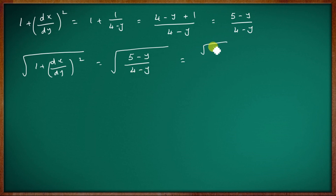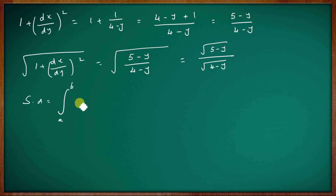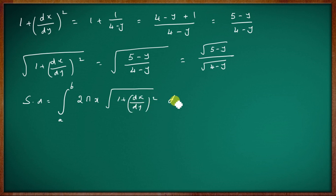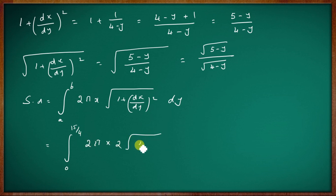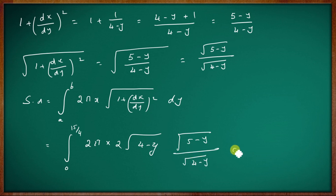Then 1 + (dx/dy)² = 1 + 1/(4−y) = (5−y)/(4−y). The square root is √(5−y)/√(4−y). Substituting into the surface area formula with limits 0 to 15/4, and x = 2√(4−y), the integrand simplifies with √(4−y) cancelling.